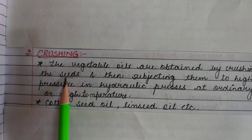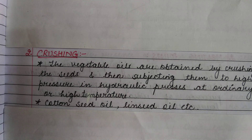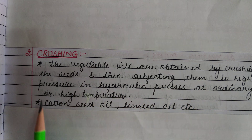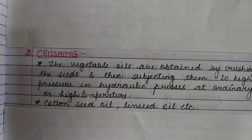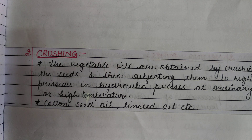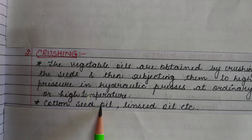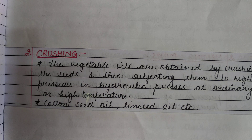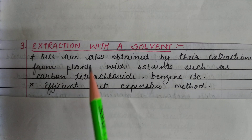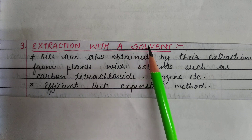The second method is crushing. Vegetable oils are obtained by crushing the seeds and then subjecting them to high pressure in hydraulic presses at ordinary or high temperatures. Cottonseed oils and linseed oils are produced by this method.